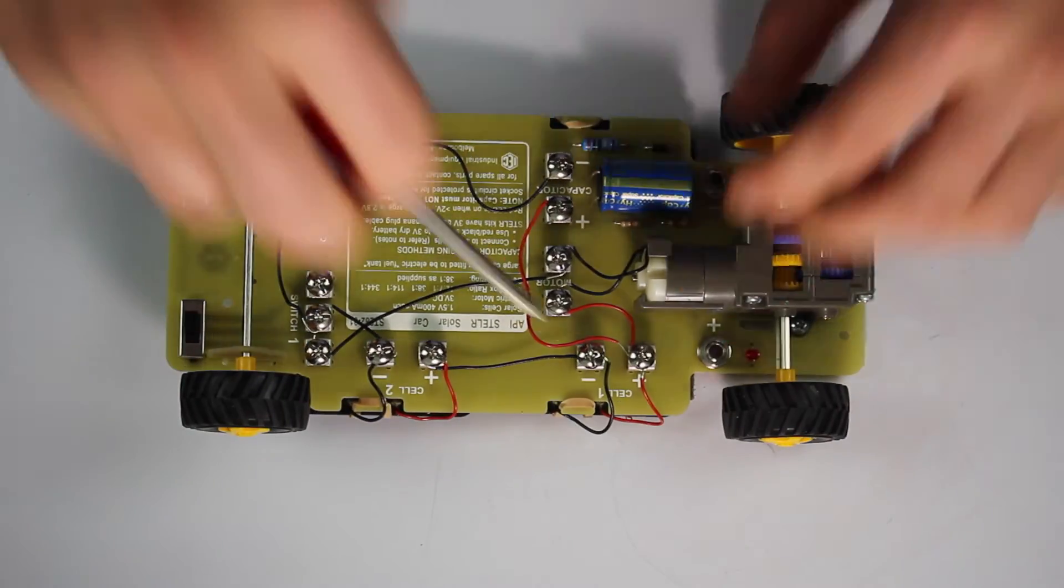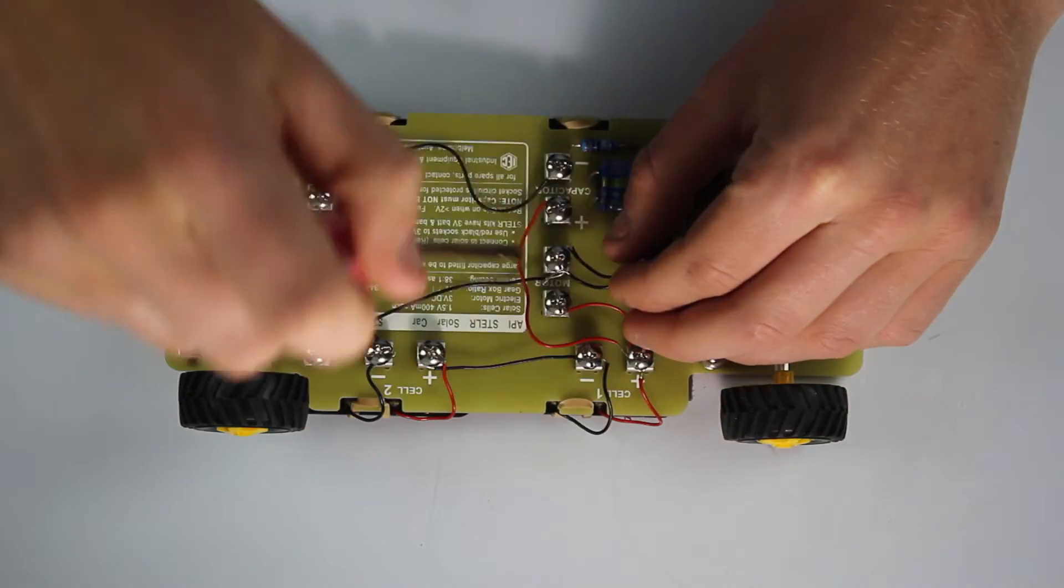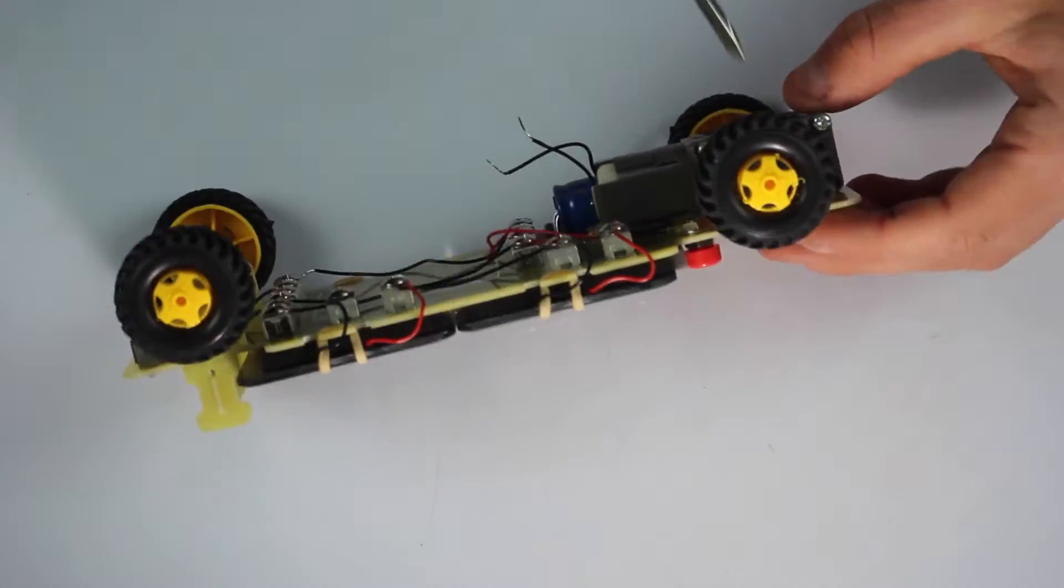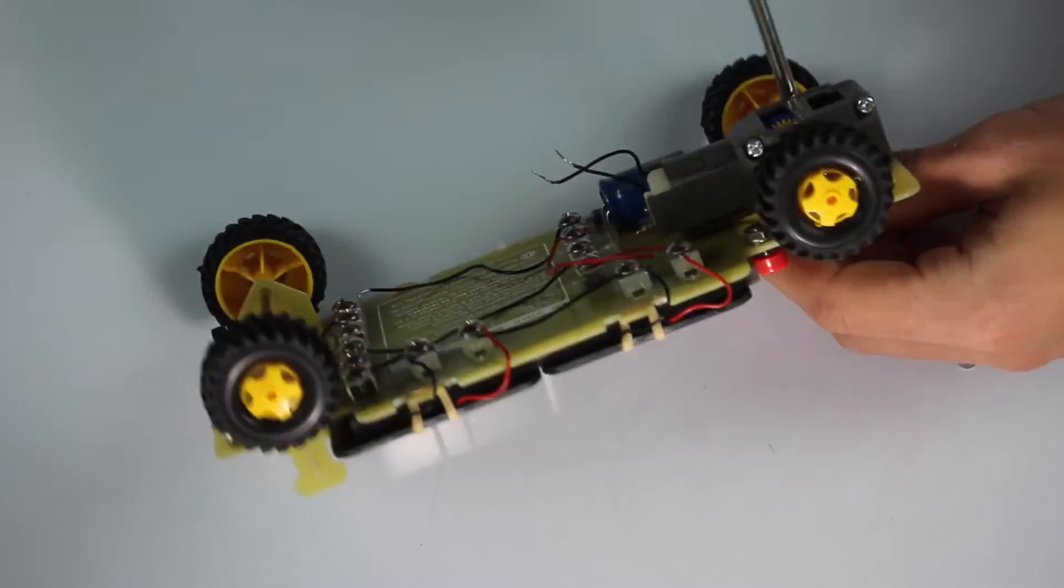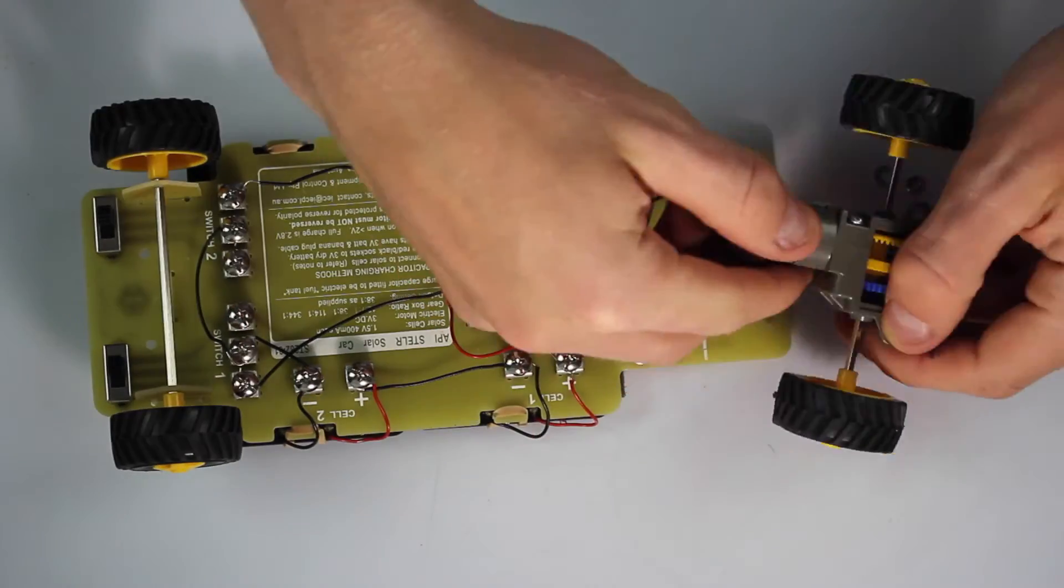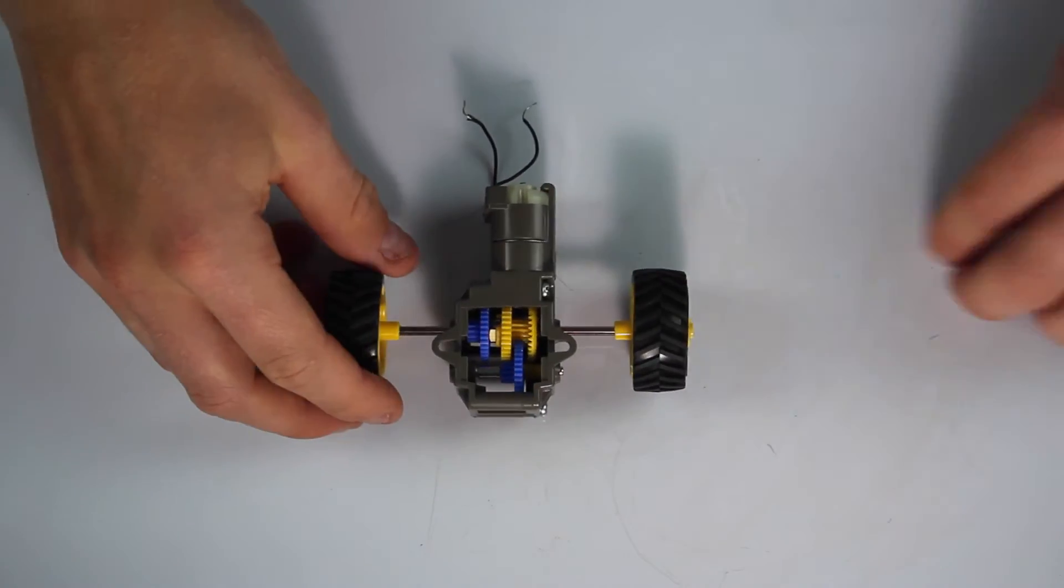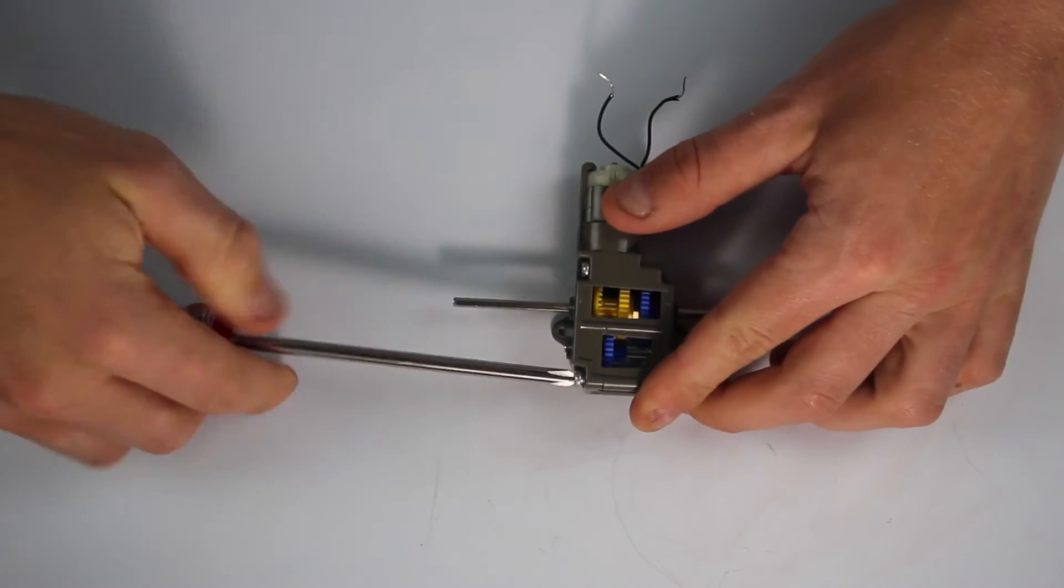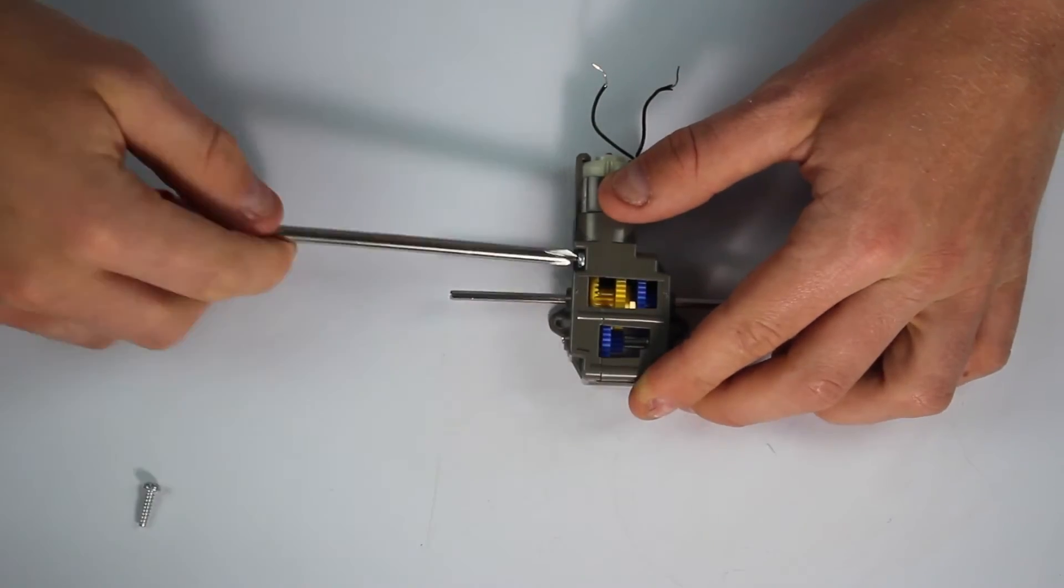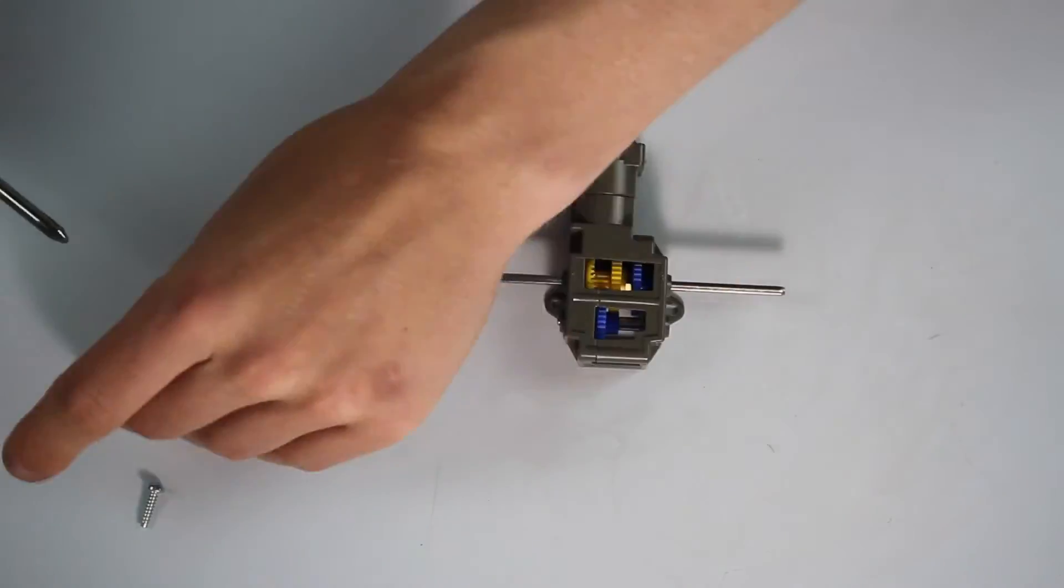We will begin by removing the electric motor's wire connections to the PCB. Then we will remove the screws, nuts and washers that hold the electric motor to the main solar car body. We then remove the wheels. We remove the three screws that are currently holding together the car's gearbox, electric motor and shaft.